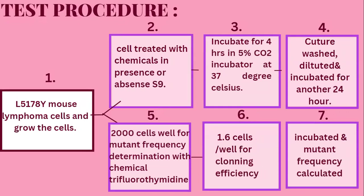To perform this assay, first select L5178Y mouse cells, isolate the lymphoma cells, and grow them. Cells are then treated with chemicals in the presence or absence of S9, a specific enzyme carrying out certain physiological functions. Then incubate for 4 hours in a 5% CO₂ incubator at 37°C, followed by subculturing, washing, diluting, and incubating again for 24 hours.